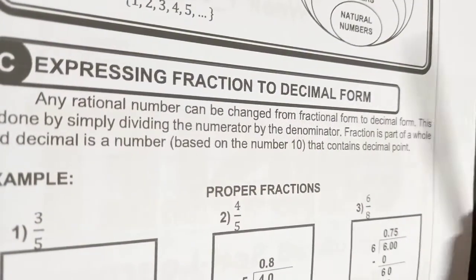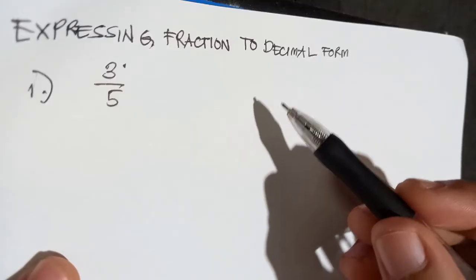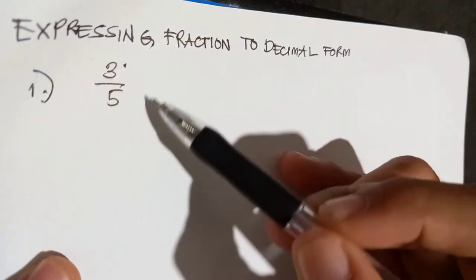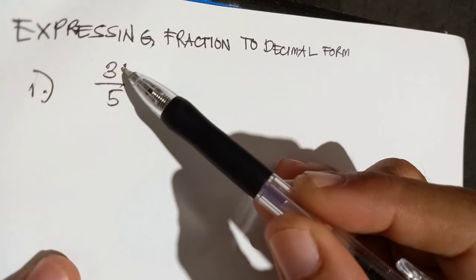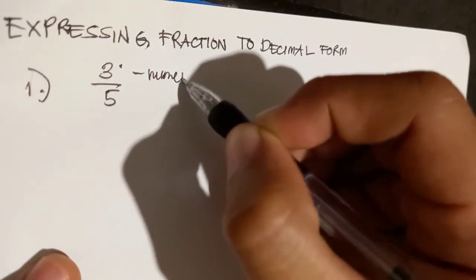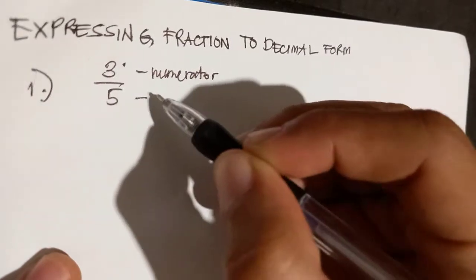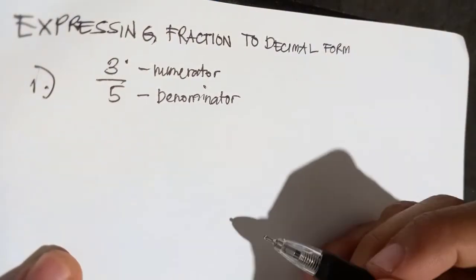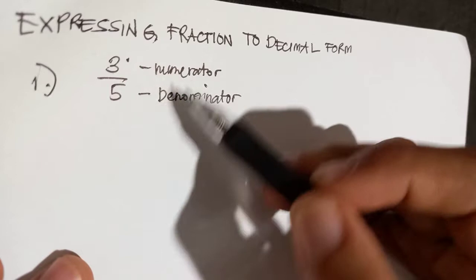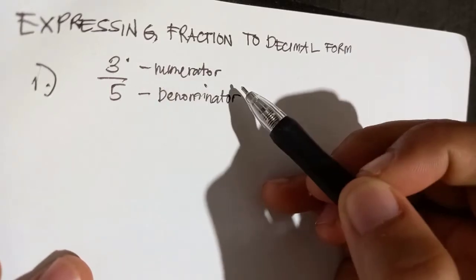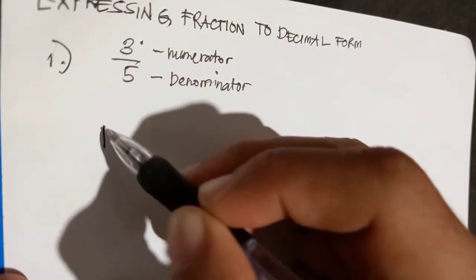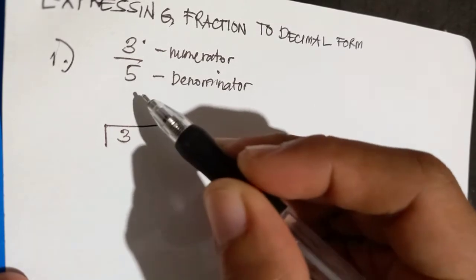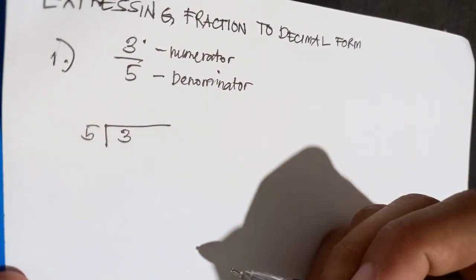So now, expressing fractions to decimal form. As a review, a fraction is in this kind of form. Your three, the upper number, is your numerator. And the lower number, your five, is the denominator. In changing this fraction to decimal, the technique is your numerator becomes your dividend — place it inside — and your five will become your divisor. So divide.